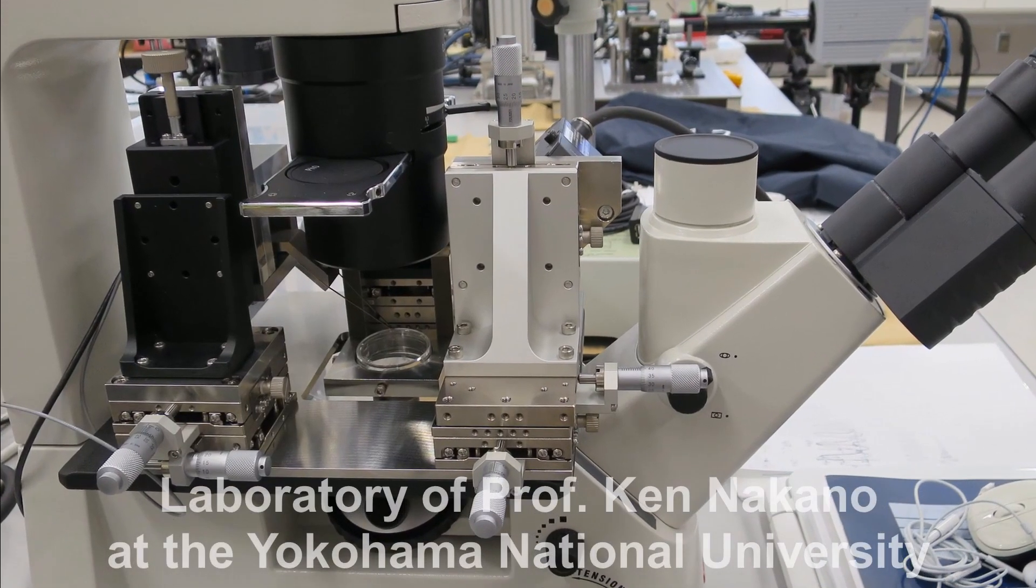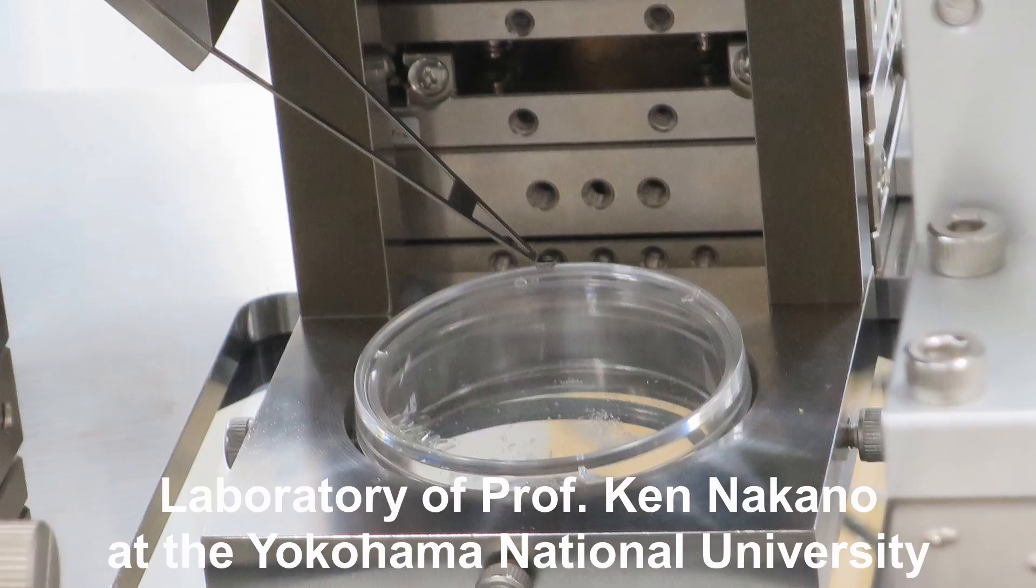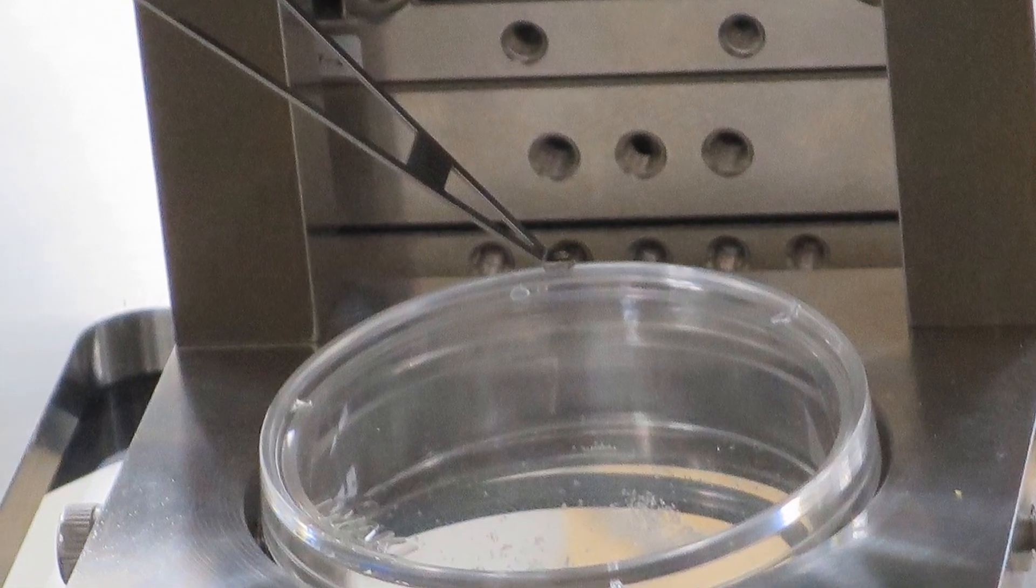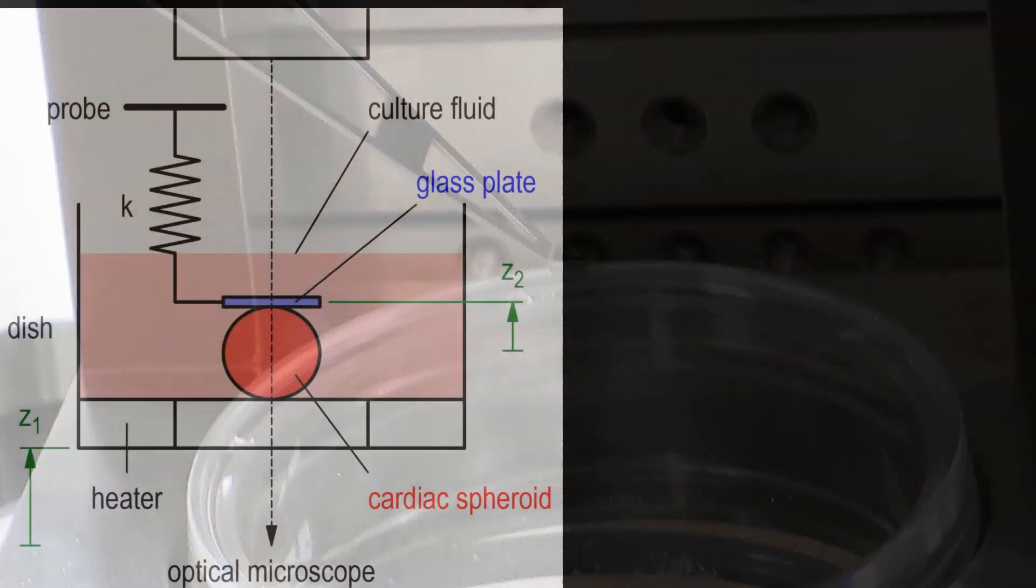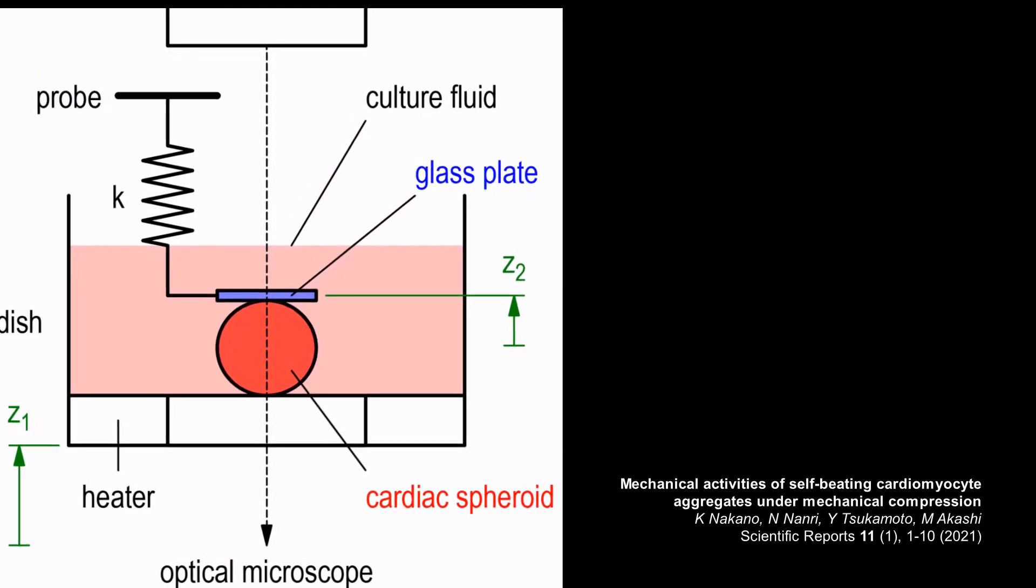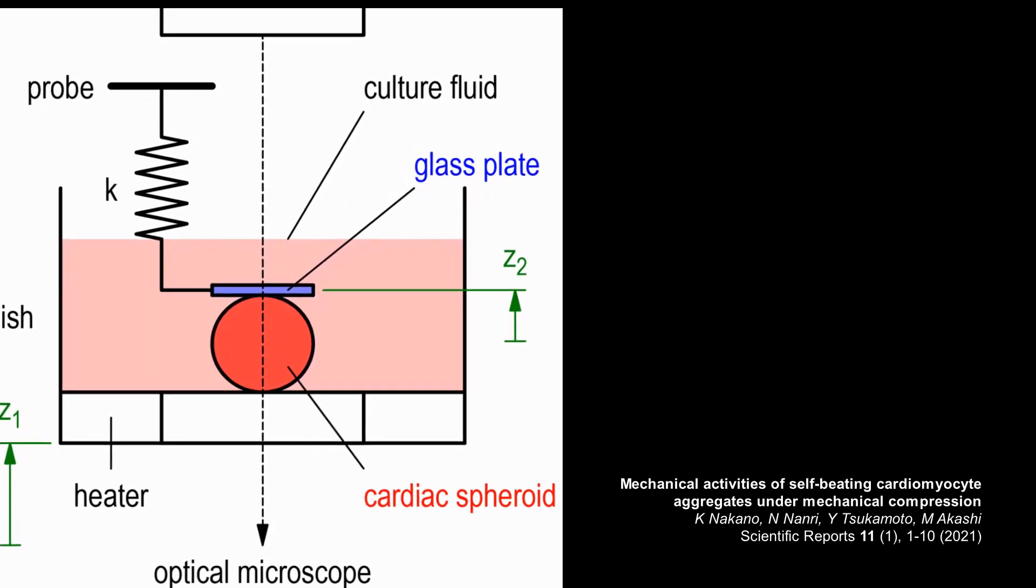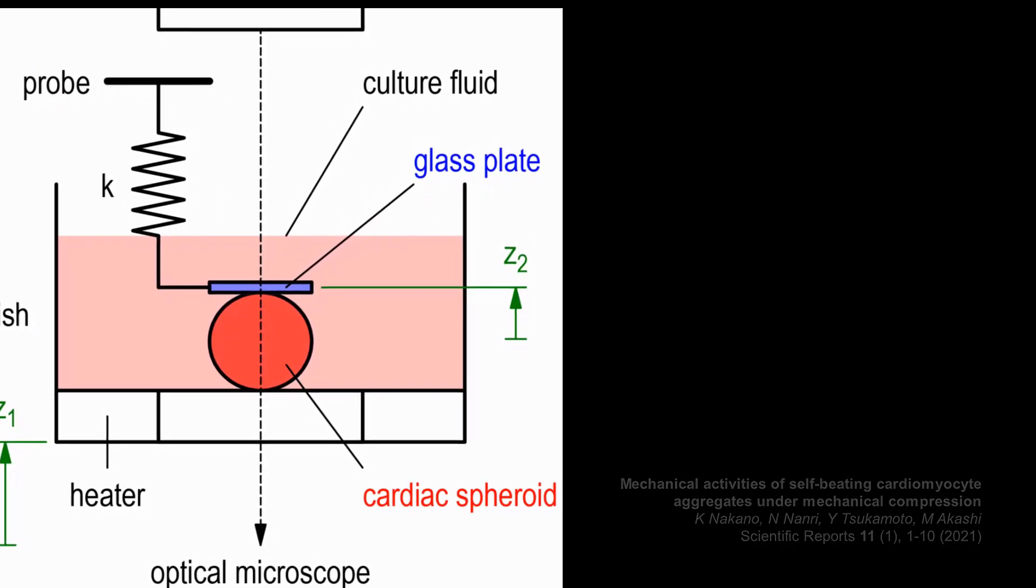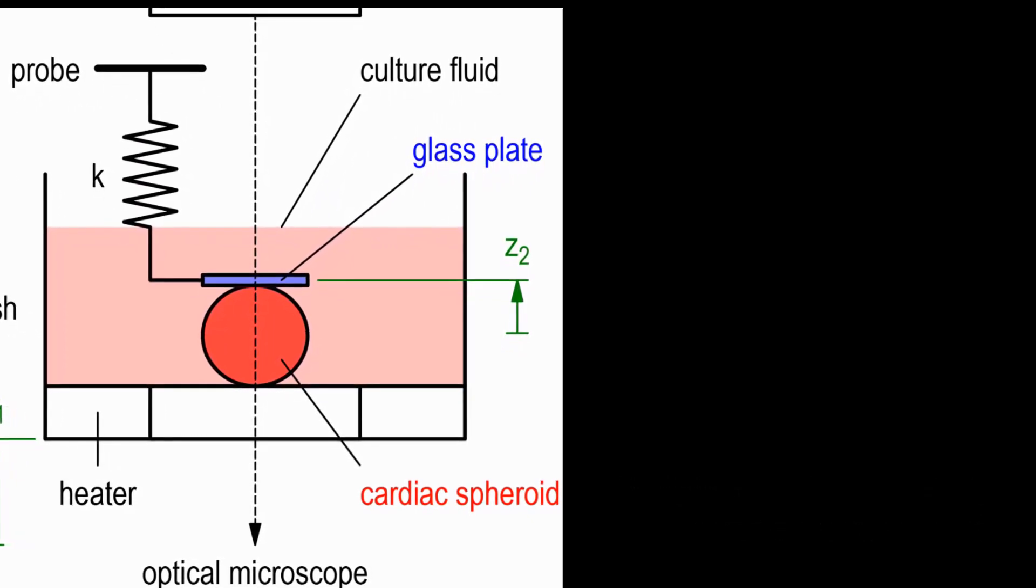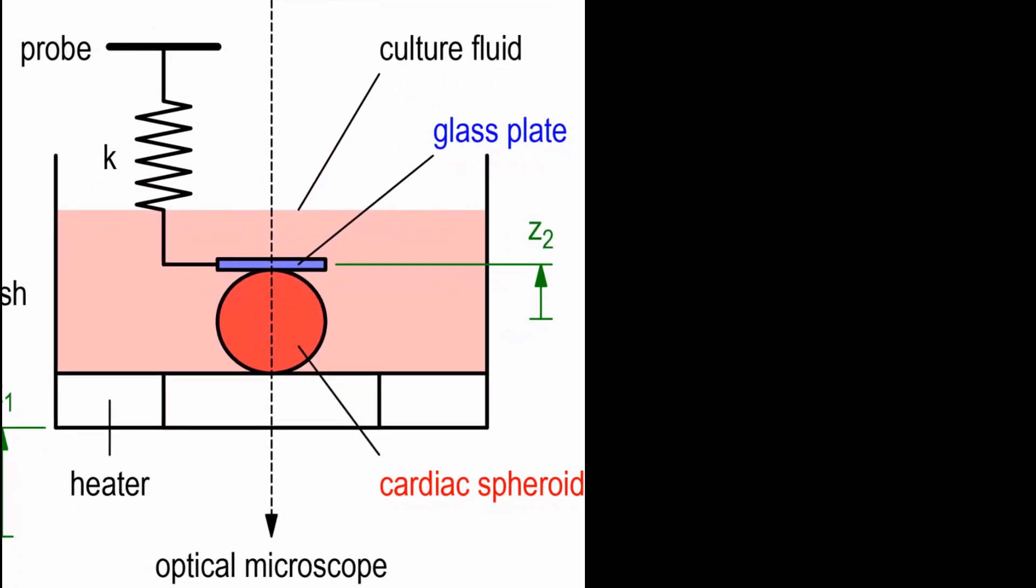The cardiac spheroid is placed in a microscope on a glass table, which can be moved in the vertical direction, and is pressed against a soft spring. This is a schematic view of the experimental setup. By moving the base plate in the vertical direction, the normal force acting on the cardiac spheroid can be increased gradually, which leads to its specific reaction, which can be seen in the following video.